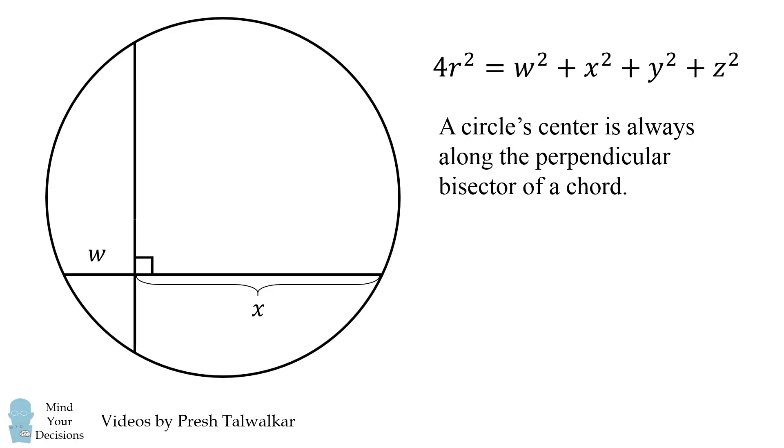So let's start out with the horizontal chord and draw its perpendicular bisector. Let's label some of these lengths. Now half of the chord will be w plus x all over 2. The remaining segment will be x minus this and that works out to be the quantity x minus w all over 2.